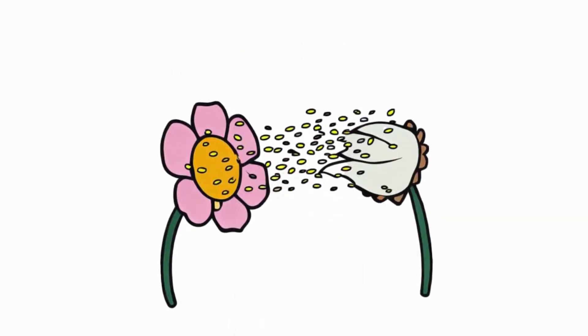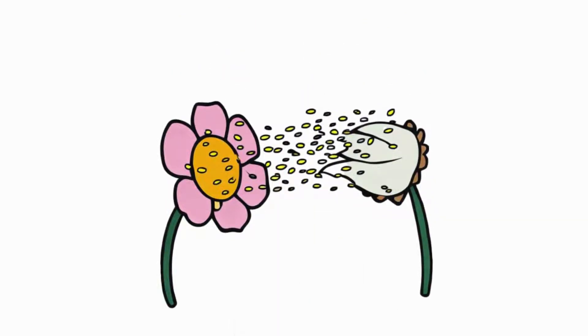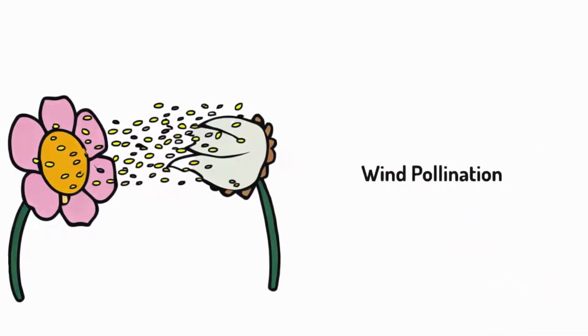Some plants don't need insects. They let the wind do the work. We call this wind pollination.